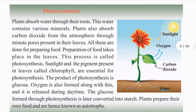Photosynthesis — glucose is converted into starch. The plants prepare their own food and hence are called autotrophs.